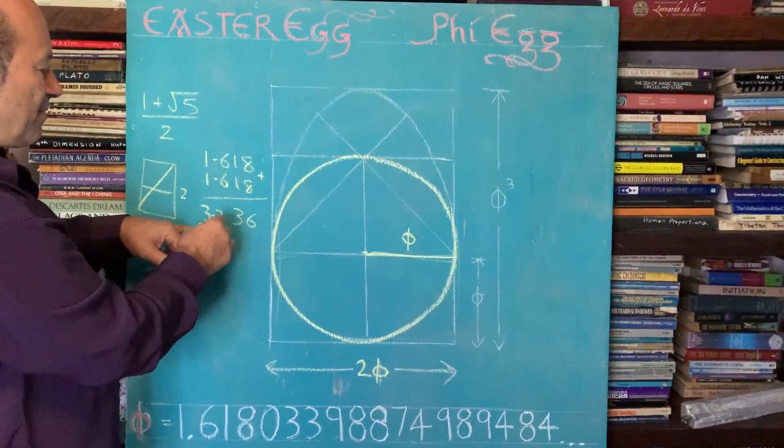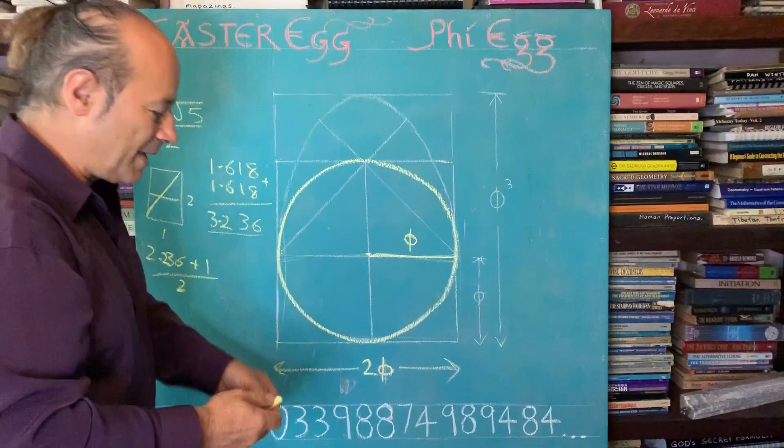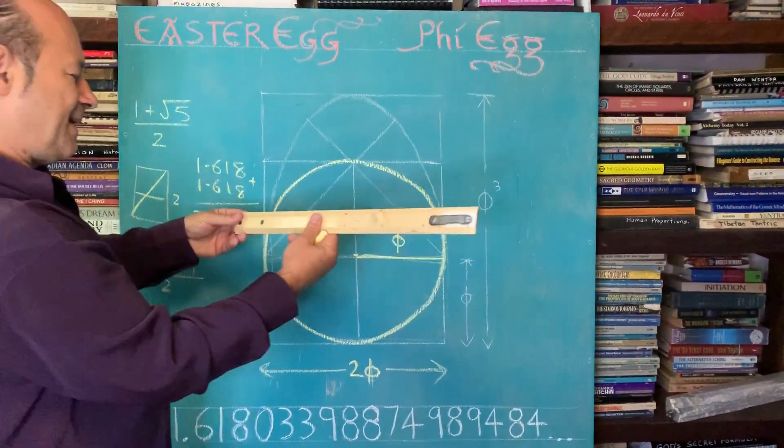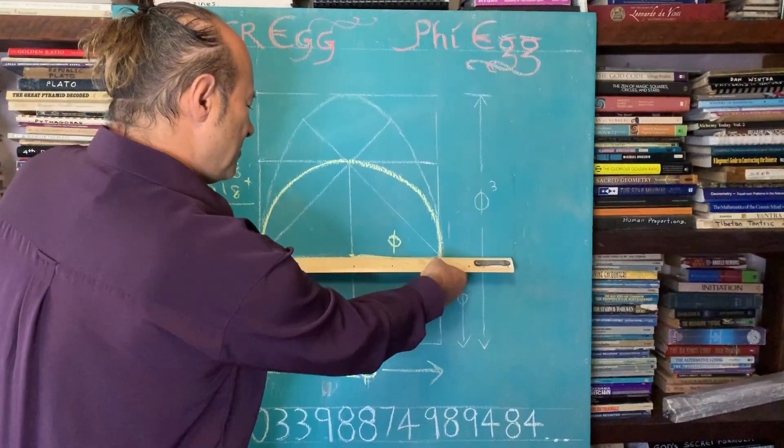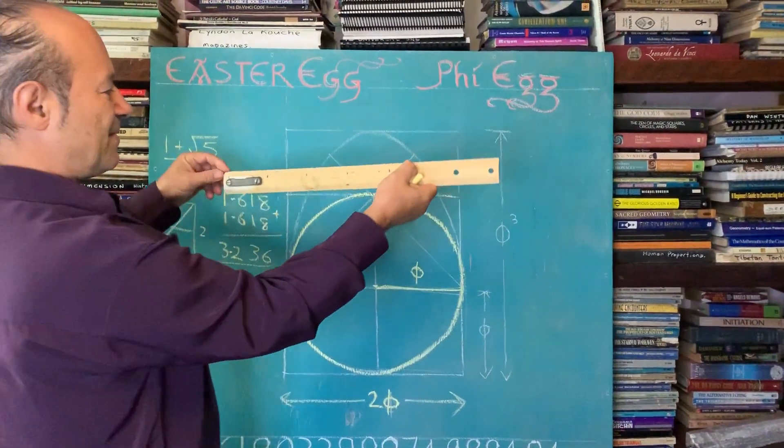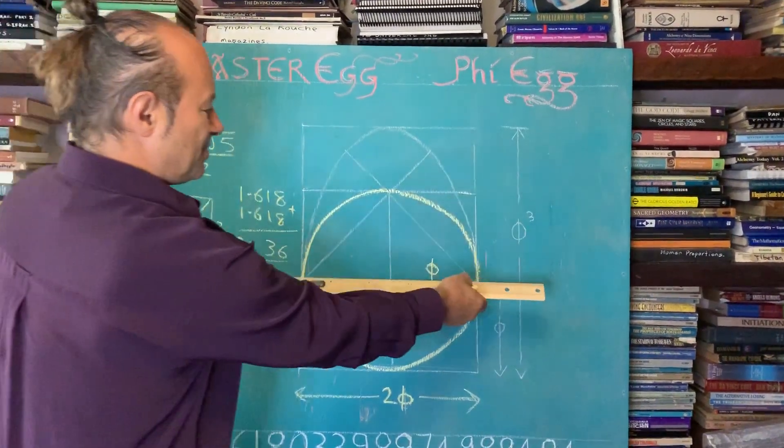The diameter is 3.236. Now what happens is, I need to get this distance. So I need to get this diameter of 2 point, I'll do it from here. So I've marked it here. So that value here to my thumb is 2.236.